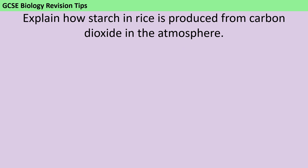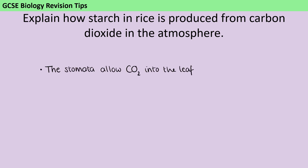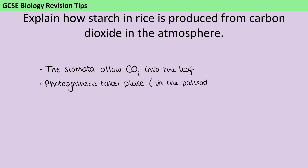At first glance this may appear to be quite an easy question. We see carbon dioxide and starch and say this question is about photosynthesis, but often students will start writing and then realise that actually they've missed the start of the story. So let's start at the very beginning. The stomata are going to open and allow carbon dioxide from the atmosphere to diffuse inside the leaf. That carbon dioxide is then used as one of the raw materials for photosynthesis, and we can specify that that is taking place in the palisade mesophyll layer of the leaf.